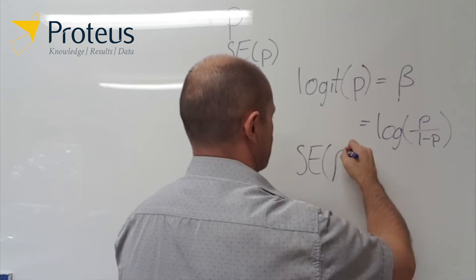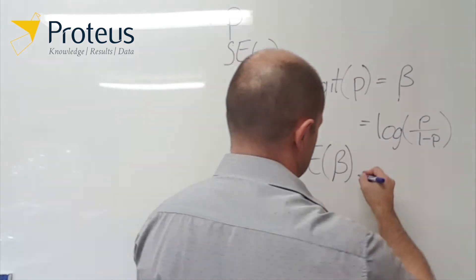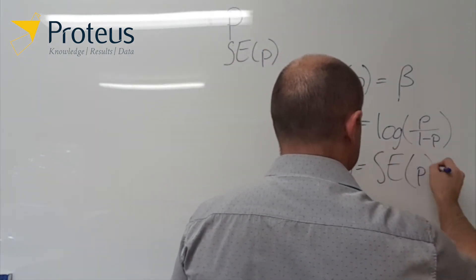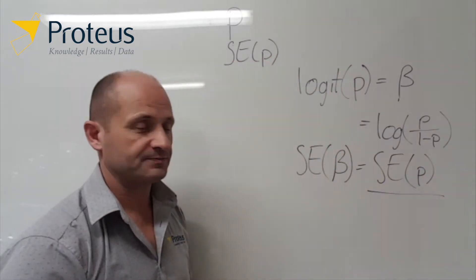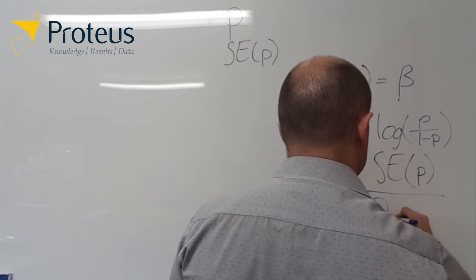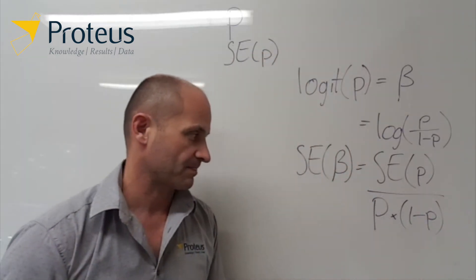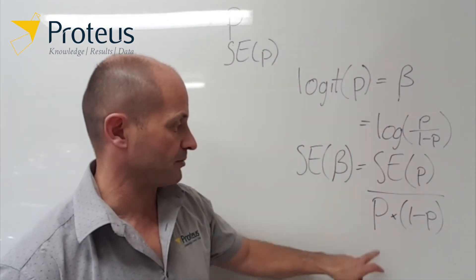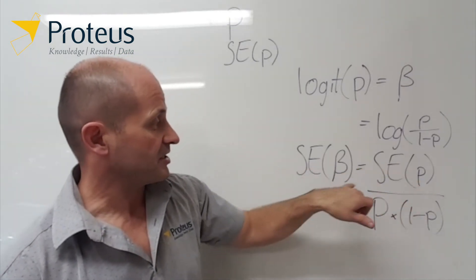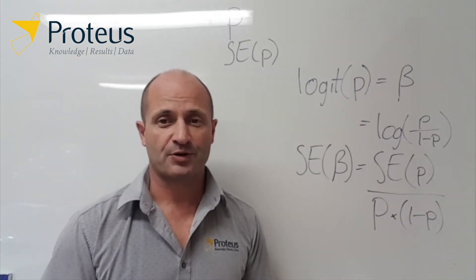So the standard error for beta, after we apply the delta method, is simply the standard error for the probability divided by that probability times 1 minus that probability. So it's actually fairly straightforward. If we know what the probability is and the standard error for that probability, to calculate the standard error of beta, we just insert those values into the equation, and it works out pretty straightforward.